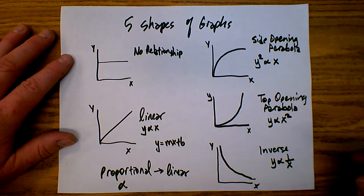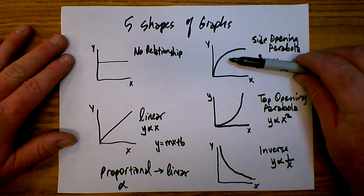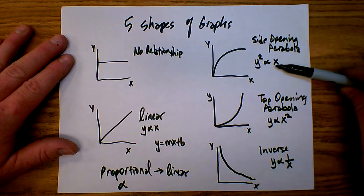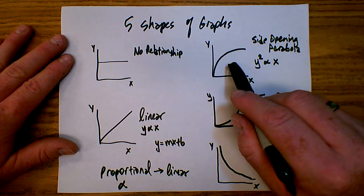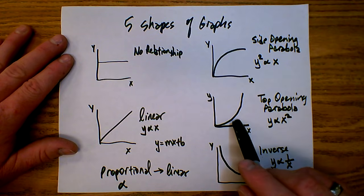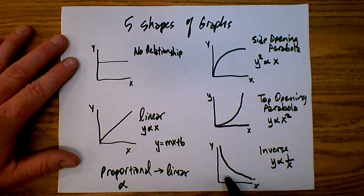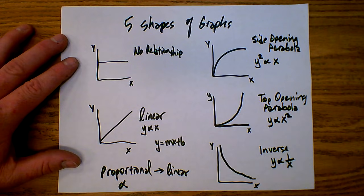What you really need to know is: recognize the shape, the name of the shape, and the proportional relationship. You just have to memorize that a side-opening parabola means y squared proportional to x; a top-opening parabola means y proportional to x squared; and an inverse means y proportional to 1 over x. Once you learn that, the linearizing part is fairly easy.